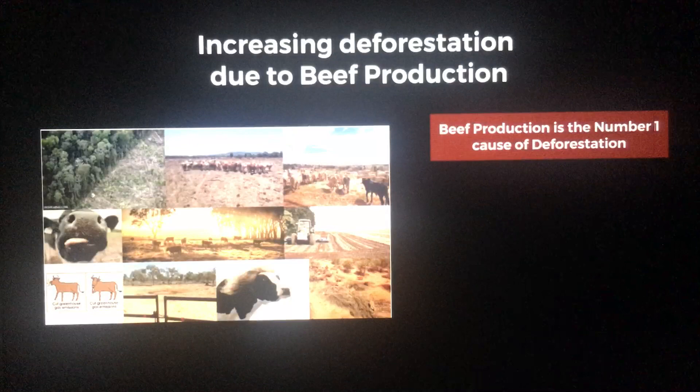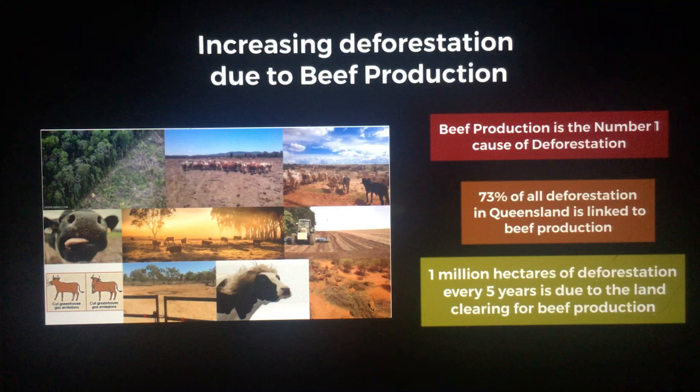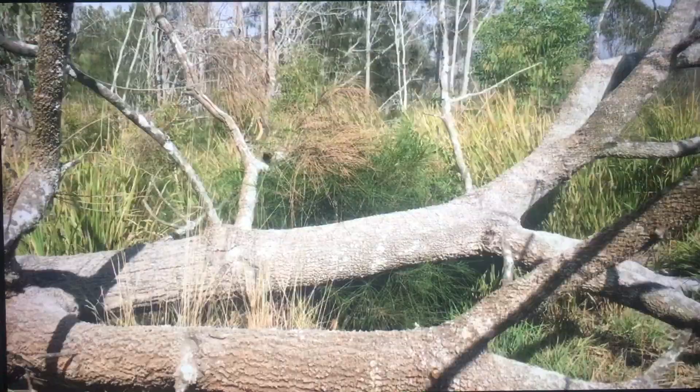Beef production is the number one cause of deforestation. 73% of deforestation in Queensland is linked to beef production. 1 million hectares of deforestation every five years is due to land clearing for beef production. Gases such as methane and carbon dioxide are the devastating results of land clearing due to beef production.